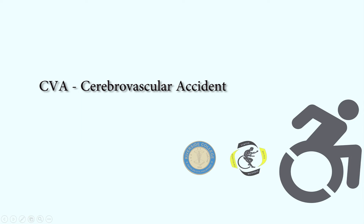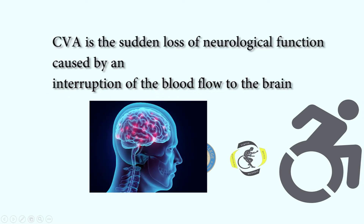Welcome to our topic about Cerebrovascular Accident, also known as a stroke. CVA is due to disruption of blood supply that causes muscle weakness. It may be due to ischemia or hemorrhage.